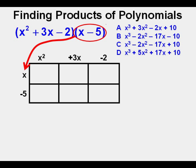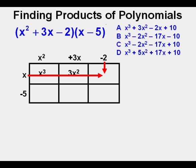Here in the upper left box we place the product of x and x squared and that product is x cubed or x to the third power. In the next box we place the product of x and 3x and that is 3x squared. In the upper right box we place the product of x and negative 2 and that is negative 2x. In the lower left box we find the product of negative 5 and x squared and that is negative 5x squared. In the next box we find the product of negative 5 and 3x and that product is negative 15x. In the lower right box we find the product of negative 5 and negative 2 and that product is positive 10.